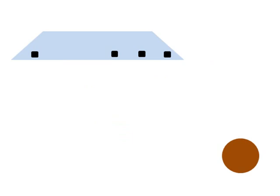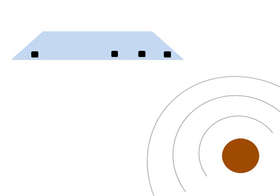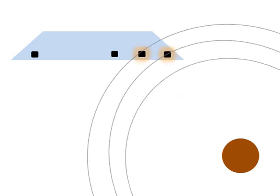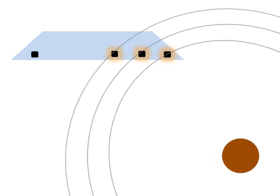The microphone array makes it possible to determine the position of audio sources. When an object in front of the Connect makes a sound, the microphones closer to the object will pick up the sound first. By using this information, you can determine the location of the source.